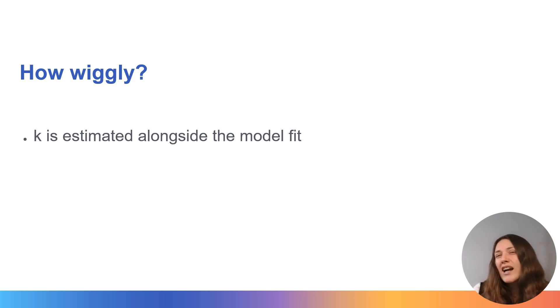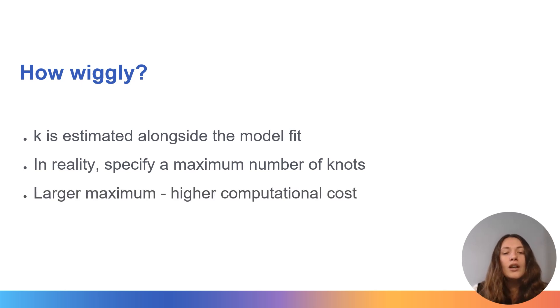In reality, we don't actually specify k. It's estimated alongside model fit. In reality, what we need to do as users of our software is to specify the maximum number of knots that we would allow in our model in order for it to not become over wiggly. And what happens is that once we hit the correct maximum number, once it's high enough, increasing it further is not actually going to improve the function and it's not going to change the estimated number of knots. What it will do instead is rapidly increase the computational cost of fitting this model.